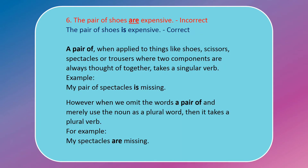The pair of shoes are expensive — this is incorrect. The correct form is: the pair of shoes is expensive. 'A pair of,' when applied to things like shoes, scissors, spectacles, or trousers — where two components are always thought of together — takes a singular verb. For example: my pair of spectacles is missing. However, when we omit 'a pair of' and merely use the noun as a plural word, then it takes the plural verb. For example: my spectacles are missing.